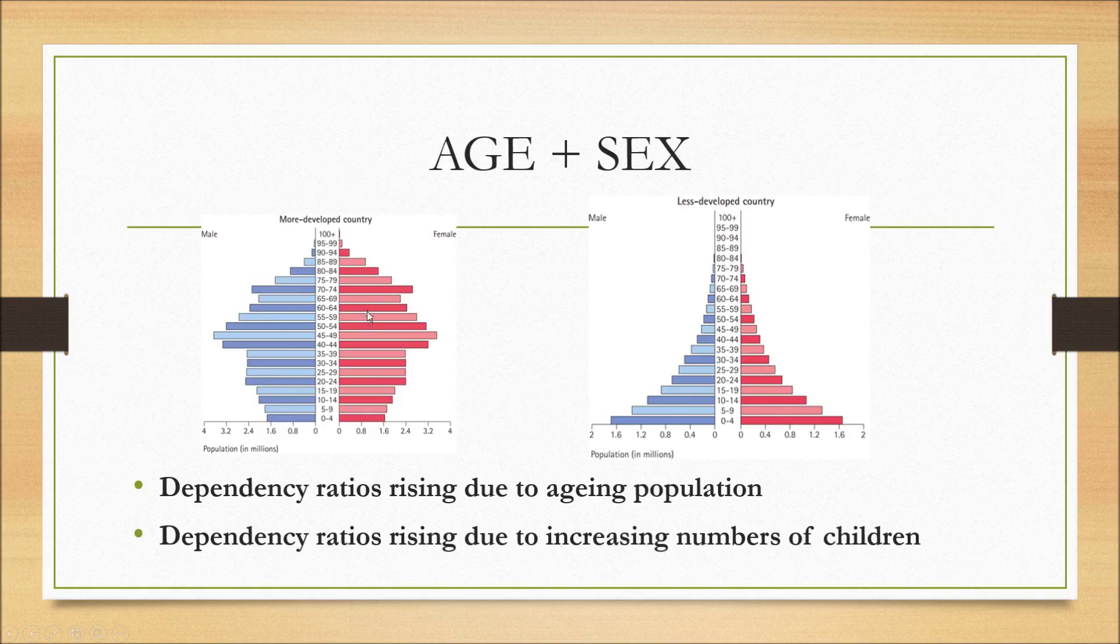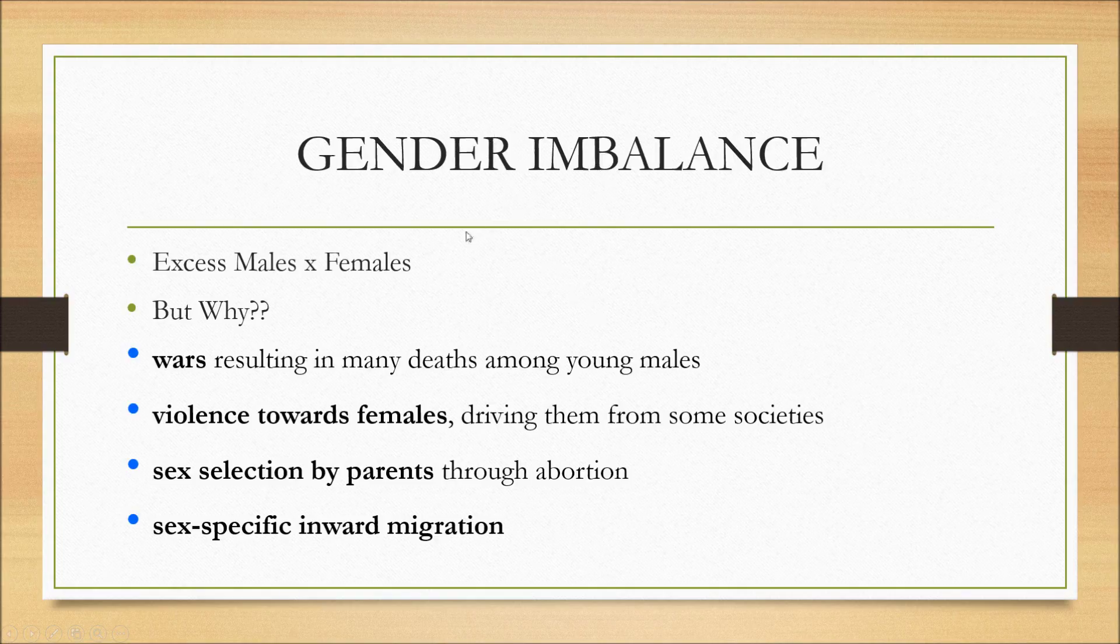Also rising in less developed countries as shown here from 0 to 19 or maybe 15 where there are lots of people, increasing number of children. There's also the gender imbalance which is meant by excess males or females. But why does that happen? Because gender imbalance might happen because of wars resulting in many death among young males, violence towards females so they might drive them from some societies, sex selection by parents through abortion so they only want males or they only want females, and sex specific inward migration. Example of this might be male guest workers brought in to a certain country for construction and other industrial purposes.